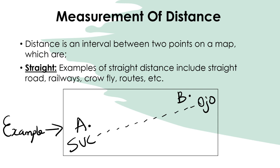Examples of straight distance include straight roads, railways, and routes. The crow-fly distance is also a good example of a straight line. For instance, a straight line from Socks to Ojo is an example of straight-line distance.